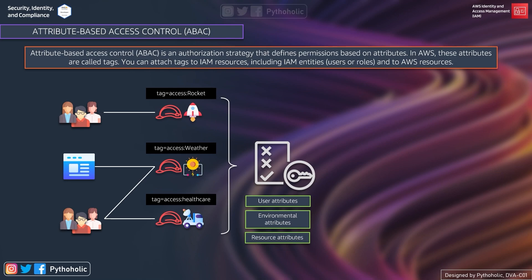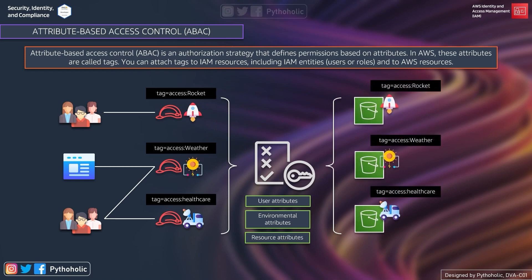Let's see an example. We have three projects with tags: access-rocket, access-weather, and access-healthcare. The policies attached are based on three types of attributes: user attributes, environmental attributes, or resource attributes. Resources are coupled with access tags, which allow users with the same tags to make use of them. So users and entities with the rocket, weather, or healthcare tag can access the corresponding S3 buckets.